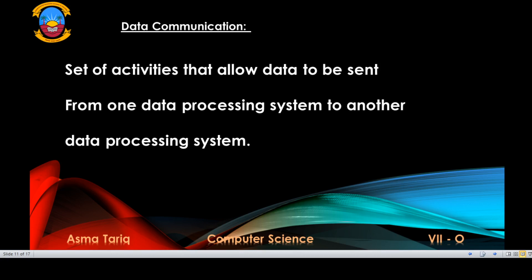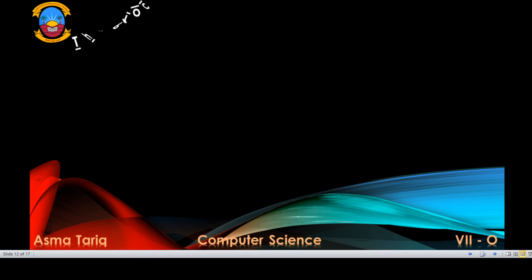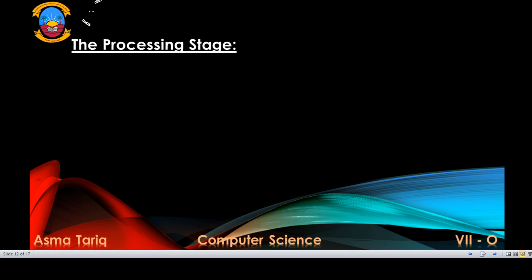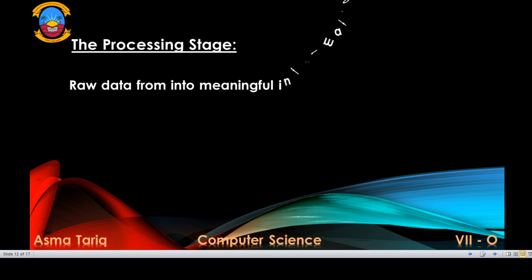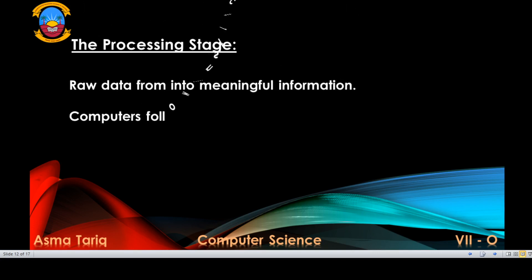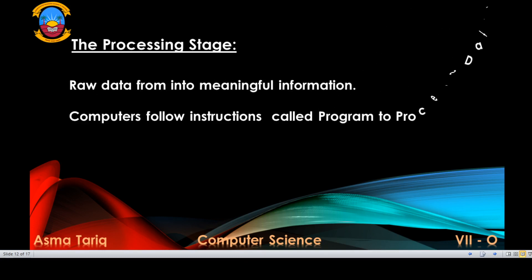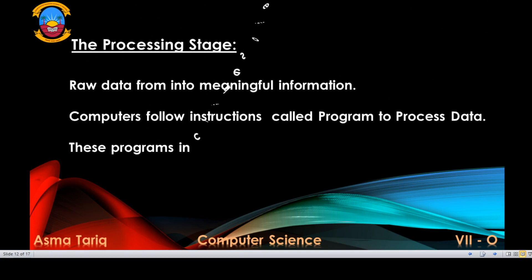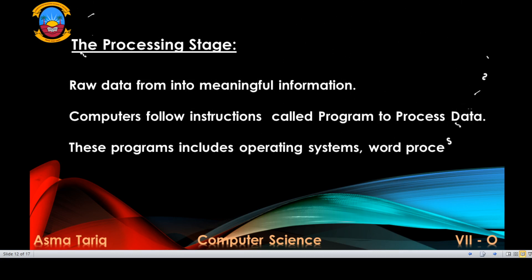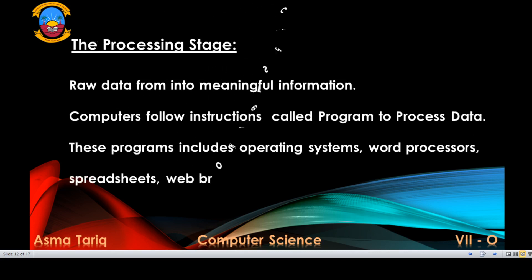After the input stage, the next stage is the data processing stage. At this stage, raw data is transformed into meaningful information to be understood by users. Modern data processing systems such as computers follow instructions called programs to process data. Typical programs may include operating systems, word processors, spreadsheets, web browsers, and so on.